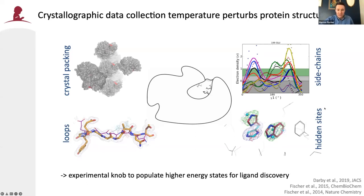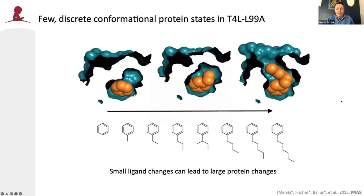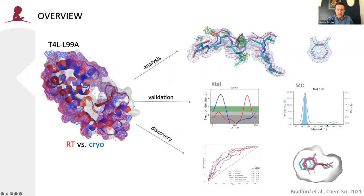In my lab we use temperature as an experimental knob to repopulate the conformational energy landscape and populate higher energy states that may be interesting for ligand discovery. The protein of interest I want to illustrate this with is the T4 lysozyme L99A artificial cavity, a workhorse for computational methods development. A cavity is created by mutation from leucine to alanine that binds a variety of hydrophobic ligands in basically three different states — closed, intermediate, and open. What's missing is a direct link to how temperature artifacts impede our ability to use structural data for ligand discovery, and that is the topic of today's talk.